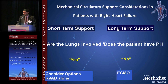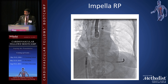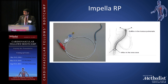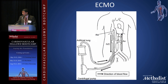If all else fails, mechanical circulatory support is needed. For acute RV failure, assess whether the patient is hypoxic and whether the lungs are involved. If lungs are involved, consider ECMO. If not, options include the Impella RP or right-sided TandemHeart, which is placed via the femoral vein, across the tricuspid valve, and into the pulmonary artery — with inflow from the IVC and outflow into the pulmonary artery.